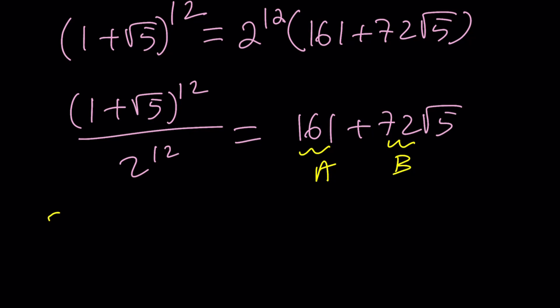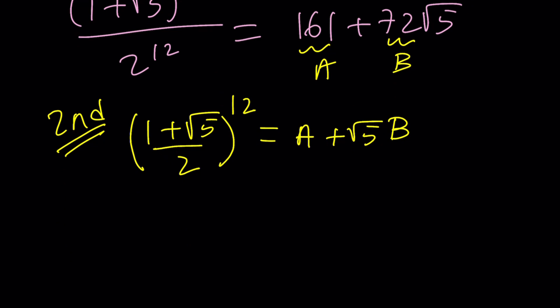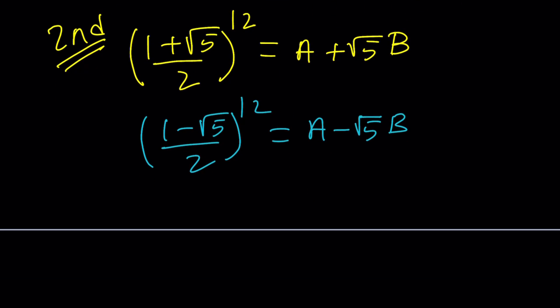So let's see if we can approach this problem from a different angle. So we have 1 plus root 5 over 2 again to the power 12 equals A plus root 5 B. So one of the things that I can think of right away is the conjugate. If you think about the conjugate, I'm probably going to get something like this. And if I multiply these two things together, that should give me something.